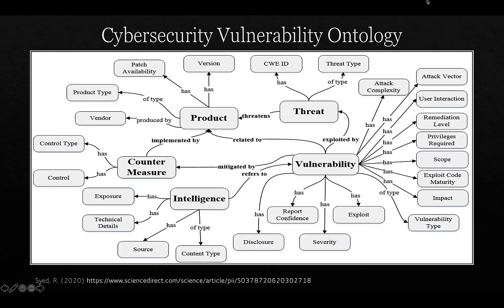This is an overall diagram of cybersecurity ontologies, and we're concerned with the vulnerability ontology in the right-hand corner, which describes various attributes of vulnerabilities — for example, whether it needs user interaction, whether privileges are required, and the impact it will have, along with the vulnerability type.